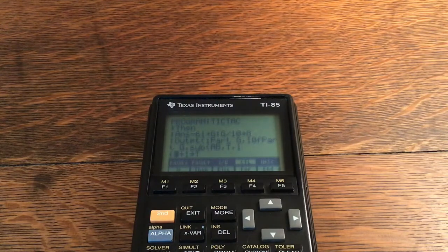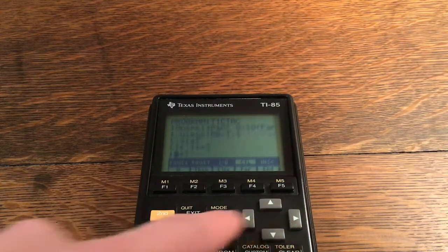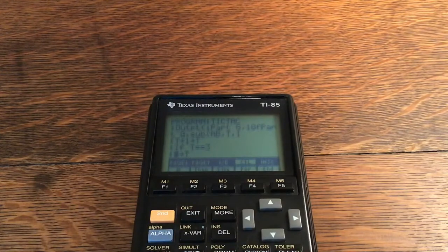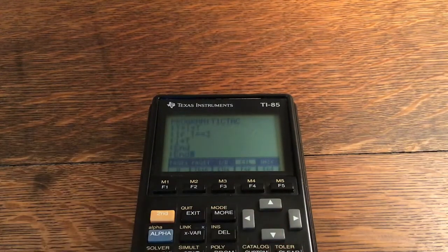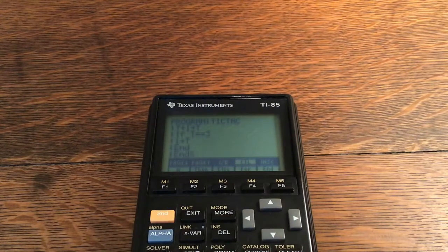T plus one store into T. If T is equal to three, then one store into T, and two Ends. And that is the entire program to make tic-tac-toe on your TI-85.